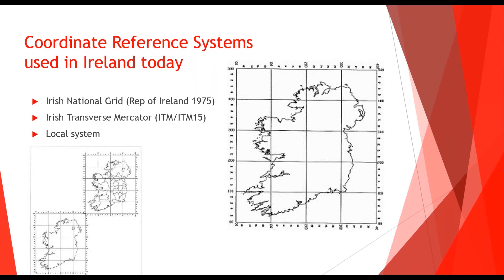In essence, we have two things that really make up a coordinate reference system and distinguish one from the other. A coordinate reference system is made up of a grid — an X and Y, as we can see on screen — and also has a theoretical surface which we use for a height reference system.